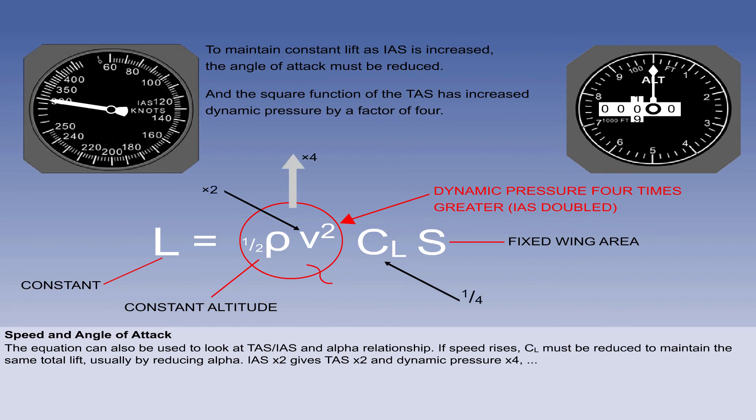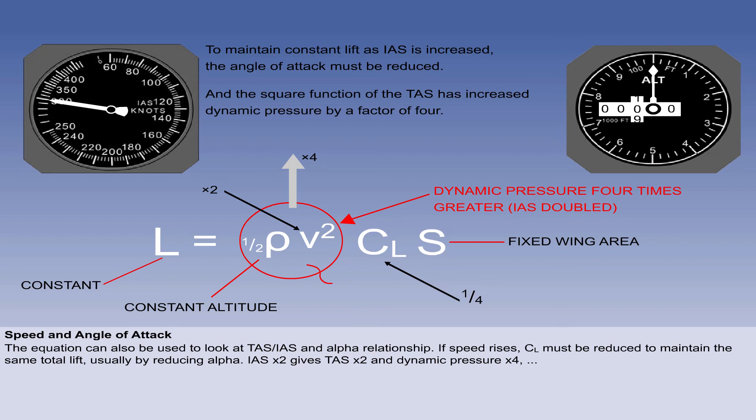If indicated airspeed is doubled, here from 150 knots to 300, the TAS also doubles, increasing dynamic pressure by 4. If dynamic pressure is increasing by a factor of 4, then to maintain lift at a constant, the CL must be reduced by the same factor. In other words, to a quarter of its previous value, by reducing the angle of attack appropriately to keep the aircraft at a constant height.